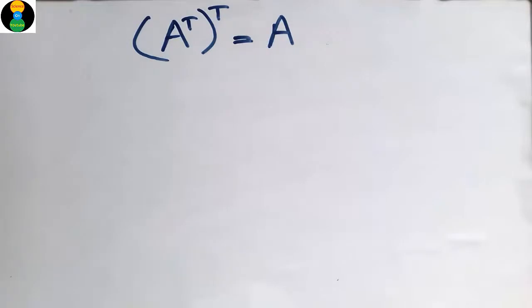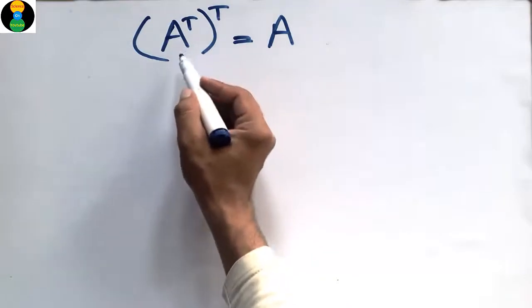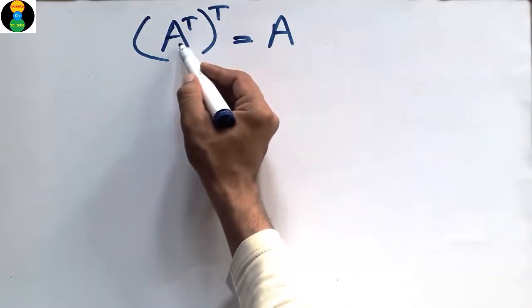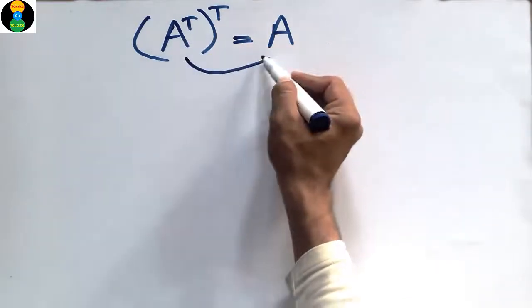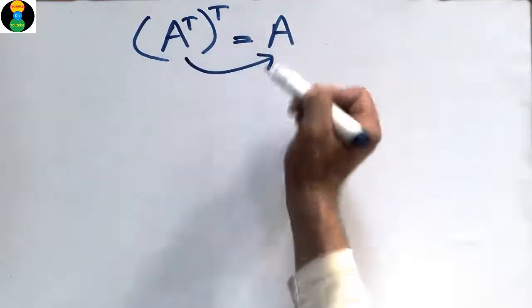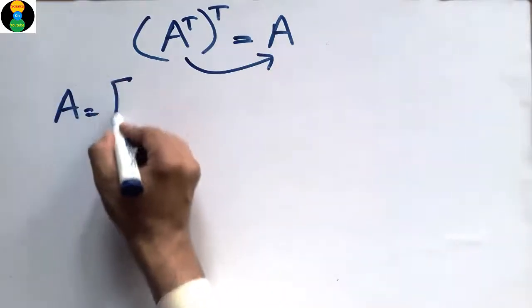Hello guys, welcome back to the Science On YouTube channel. Please subscribe our channel for more videos. Today our topic is to prove the relation that the transpose of A, and taking another transpose of the A transpose, comes out to be the matrix A again.